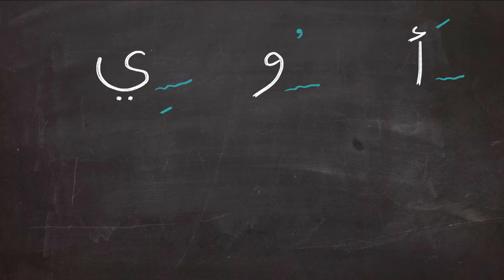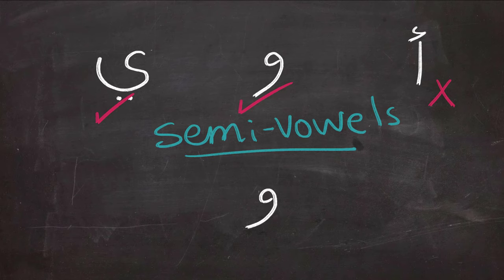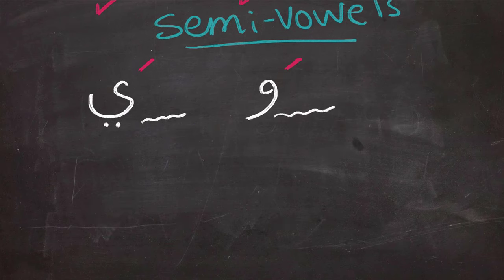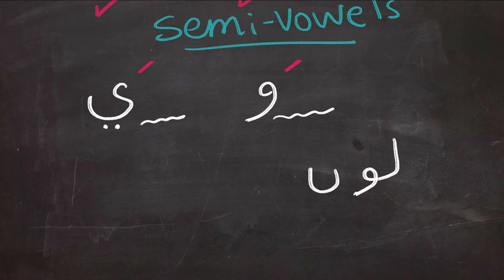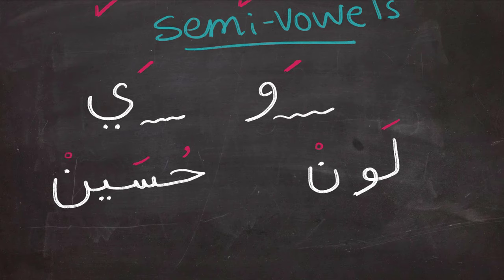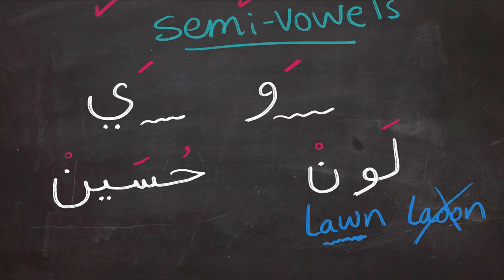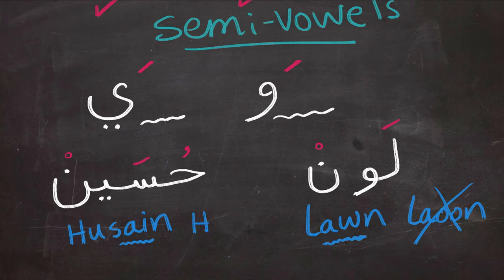But if anything else precedes these long vowels, we will have what we call a semi-vowel. This can only happen to waw and ya, not to alif, and it happens when fatha precedes them. For example, in 'lawun,' the waw is preceded by fatha rather than dhamma, so we can't say it as a long 'oo' — we say 'lawun' and the waw becomes a semi-vowel. Similarly, in 'Hussain,' the seen has fatha on top of it, so we say 'Hussain' and not 'Husseen.' You have to be careful that waw and ya can sometimes become semi-vowels.